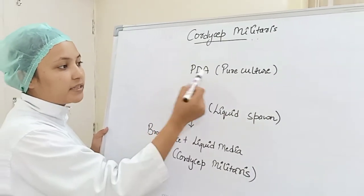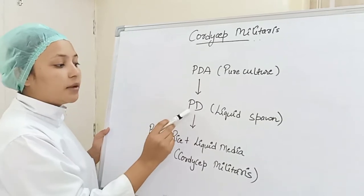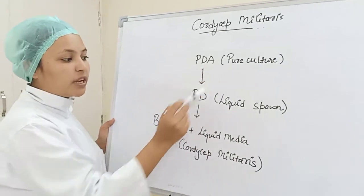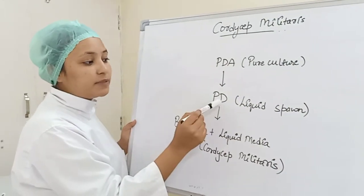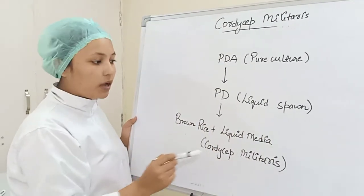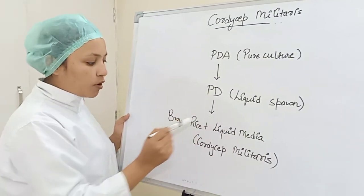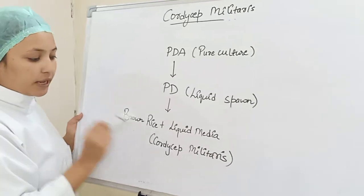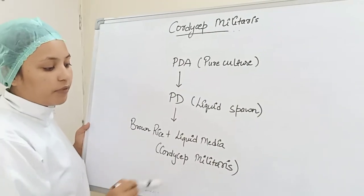When your PDA is ready, then we will add PDA, and this PD will be ready. Then we will add PDA to brown rice and liquid media, which will be ready for our Cordyceps militaris.